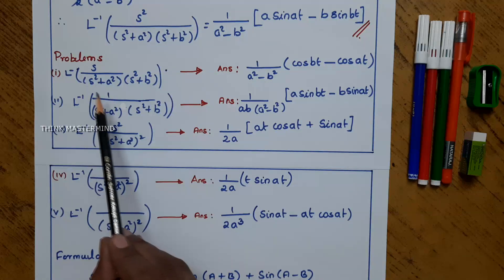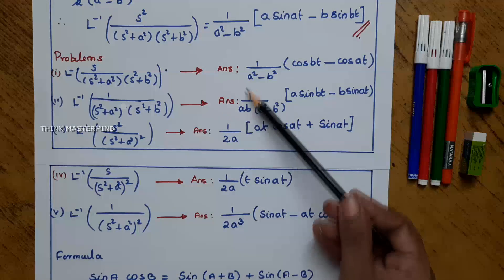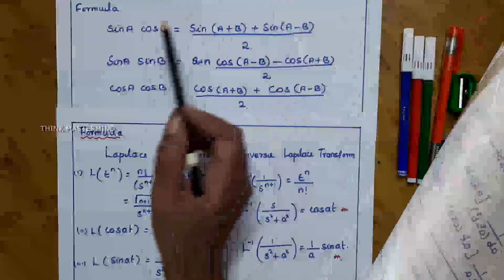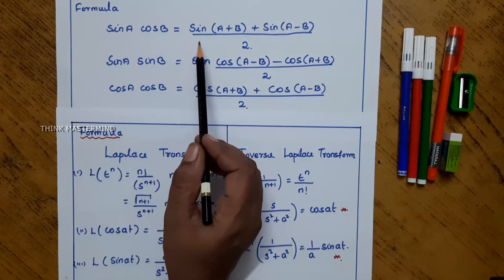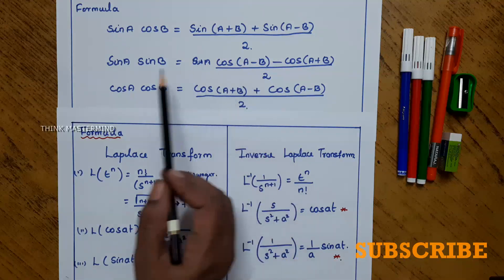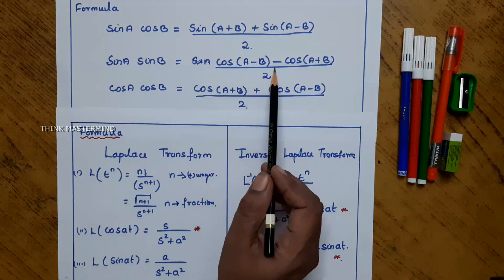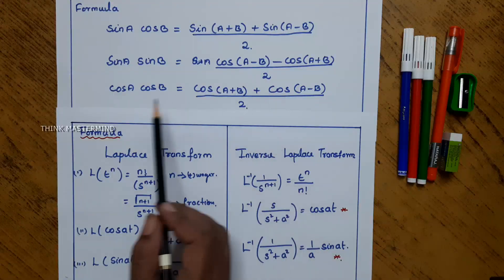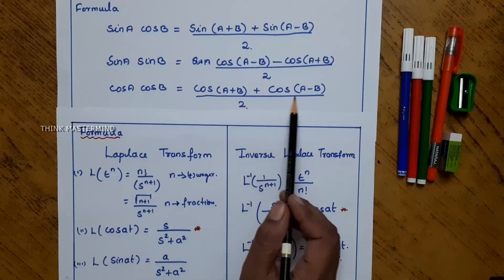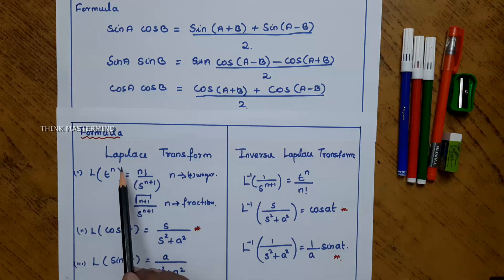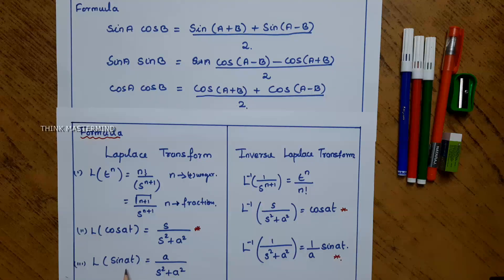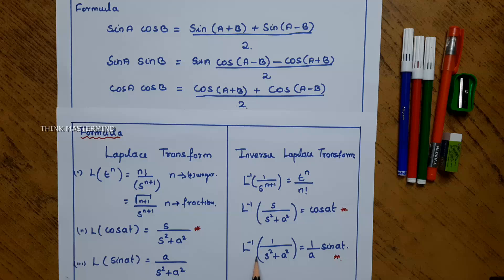Using the same procedure, we can find the Laplace inverse of the following functions. The trigonometric formulas used are: sin(a)cos(b) equals (sin(a plus b) plus sin(a minus b)) divided by 2; sin(a)sin(b) equals (cos(a minus b) minus cos(a plus b)) divided by 2; cos(a)cos(b) equals (cos(a plus b) plus cos(a minus b)) divided by 2. The Laplace transform formulas are: L{cos(at)} equals s divided by (s squared plus a squared); L{sin(at)} equals a divided by (s squared plus a squared). Similarly, L inverse of s divided by (s squared plus a squared) is cos(at), and L inverse of 1 divided by (s squared plus a squared) is (1/a) sin(at).